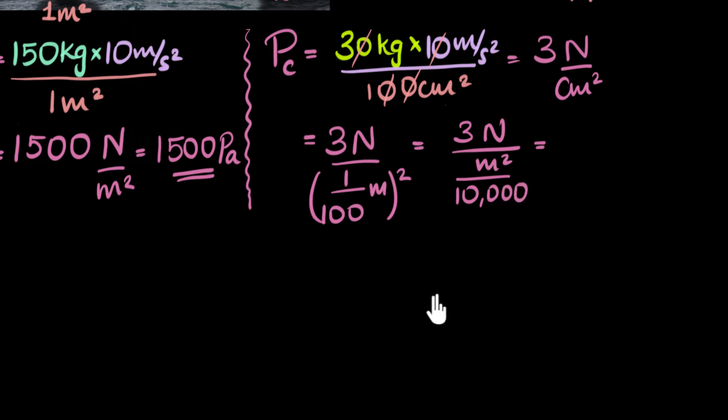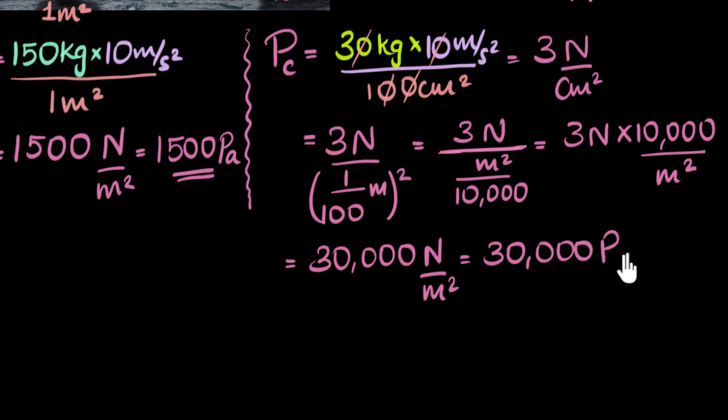What is that equal to? Well, whenever I have a fraction in the denominator, let's be very careful, I like to write this as the product of reciprocal. So I can write this three Newtons into reciprocal of this. So 10,000 divided by meter squared. And that gives me, look at that number, 30,000. 30,000 Newtons per meter squared. Ooh, that's a big number compared to the gorillas. So that is Newton per meter squared is Pascal, so 30,000 Pascals. That is the pressure.